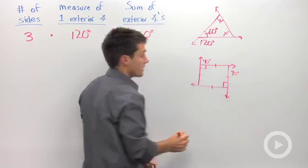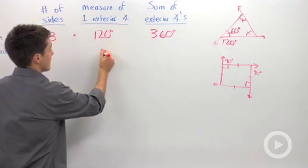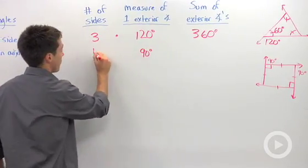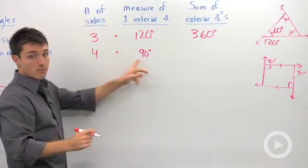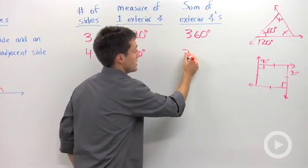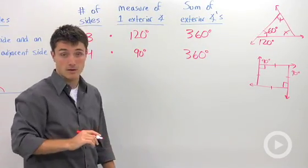Every single one of these exterior angles is going to be 90 degrees, and we have four of them. So the sum, four times 90, is 360. And it looks like we're developing a pattern here.